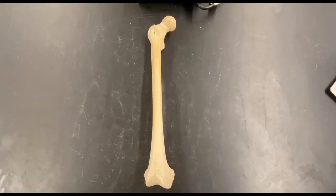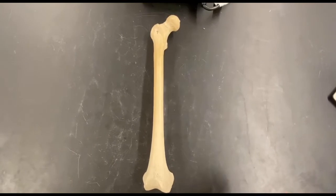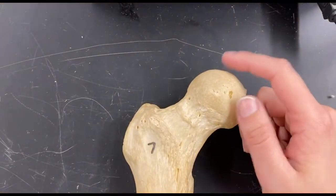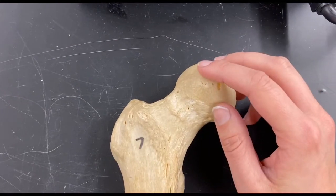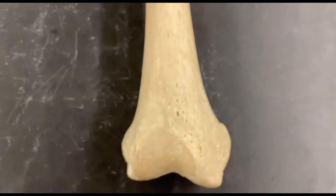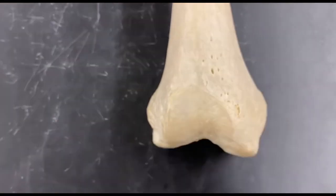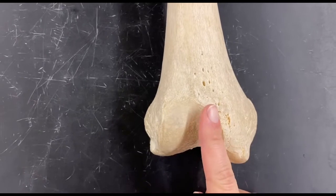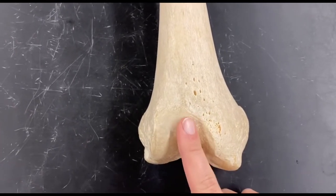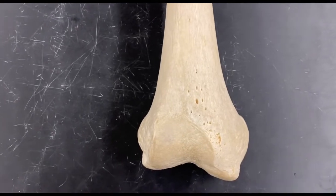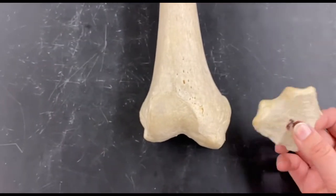So this is your right femur, and the way to know this is first know that the head of the femur is always going to be pointing medially. And then this smooth surface right there is called your patellar surface, and that is always going to be pointing anteriorly because it articulates with the patella.